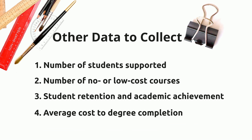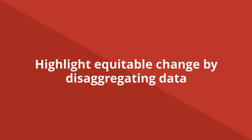Besides student saving numbers generally, there are other data points to consider collecting for your OER initiative. Other data to collect might include the number of students supported by no-cost course materials, the total number of no- or low-cost courses in place and percent of all courses, student retention and academic achievement in no- and low-cost courses, and average cost for degree completion in various majors. Reporting on this sort of extra data, particularly learning outcomes, can become even more useful when you disaggregate data to showcase the impact of no-cost course materials on students from different socioeconomic backgrounds. For example, these students who qualify for Pell Grants have the same or more positive responses to OER than their peers on average. Research like the 2018 Colvard, Watson and Park study out of Georgia have used data like this to great effect.